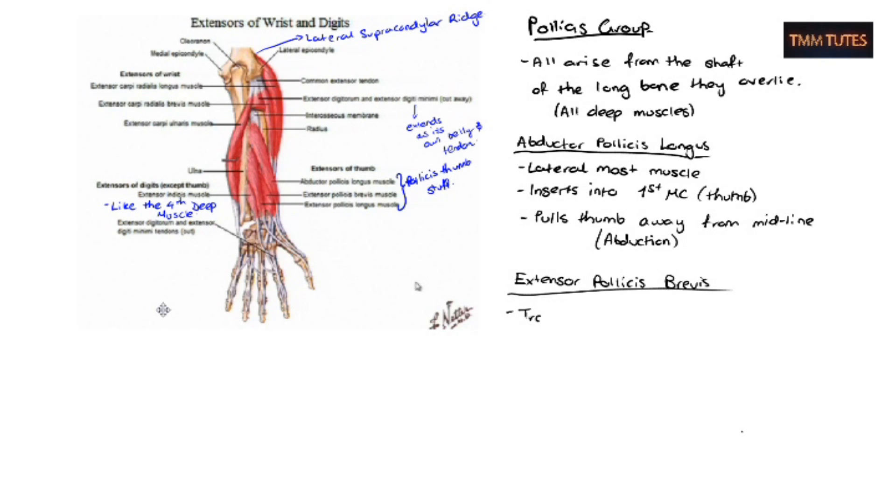So extensor pollicis brevis travels along the thumb in the most direct route. So it goes straight through along the thumb phalanx. And hence the name brevis, as I said earlier. So it inserts into the middle phalanx and extends at that joint.